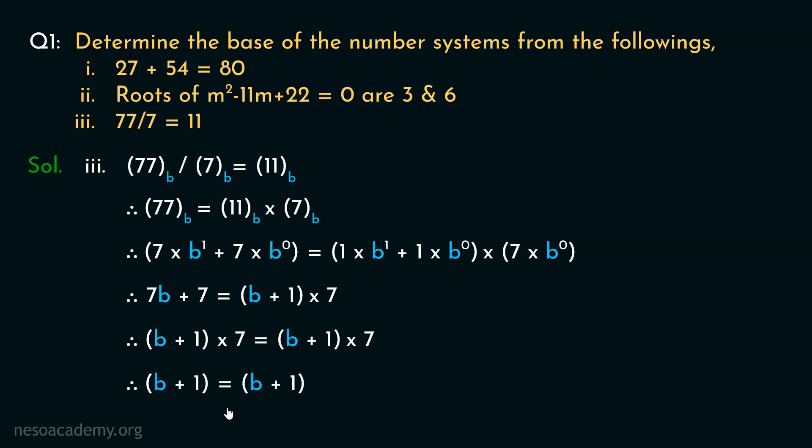Now this equation agrees with any value of b. So the value of b can be anything with just one exception. Can you guess it? Well observe, from this 7 base b we can state b must always be greater than 7. So the base for this equation can be anything as long as it is greater than 7. So with this, we are done with all these equations. Now, let's move on to the next question.